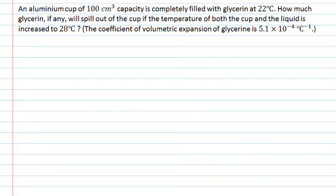In this question we have an aluminium cup with a volume of 100 cubic centimetres, completely filled with glycerin at 22 degrees Celsius. We're asked how much glycerin will spill out if the temperature of both the cup and the liquid is increased to 28 degrees Celsius. We're given the volumetric coefficient of expansion for glycerin as 5.4 × 10⁻⁴ per degree Celsius.